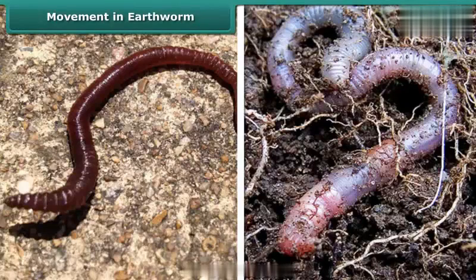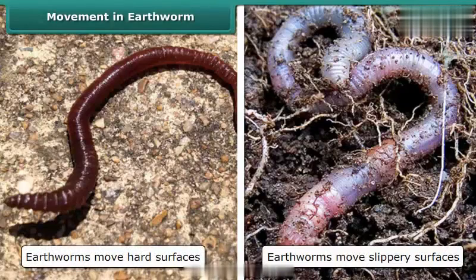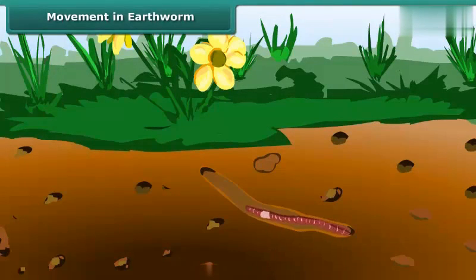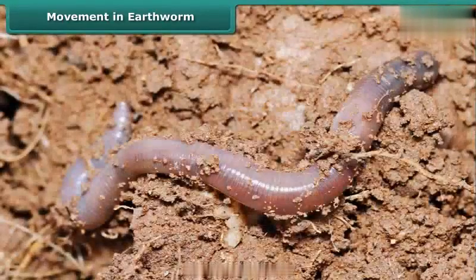Earthworms move easily on hard and slippery surfaces. They have tiny stiff hair-like projections called bristles under their body, and they grab the soil with the help of these bristles. Earthworms first stretch and then contract their muscles to move. As a result, they cover only a small distance with every move. A slimy substance secreted by the earthworm also helps it to move.